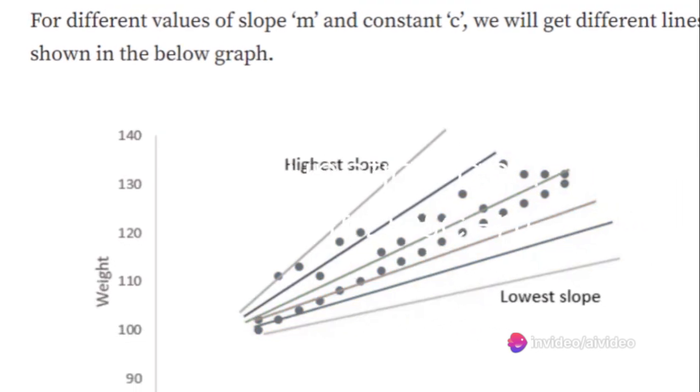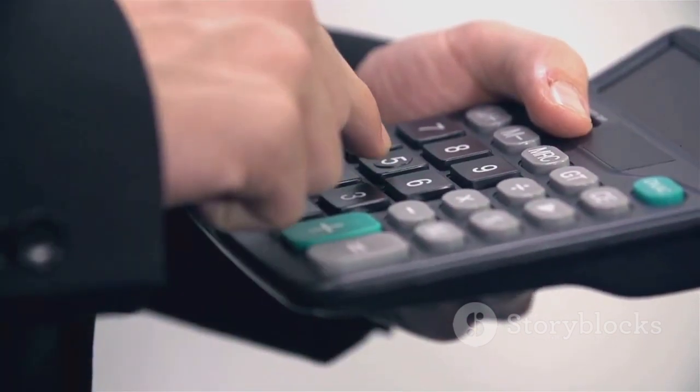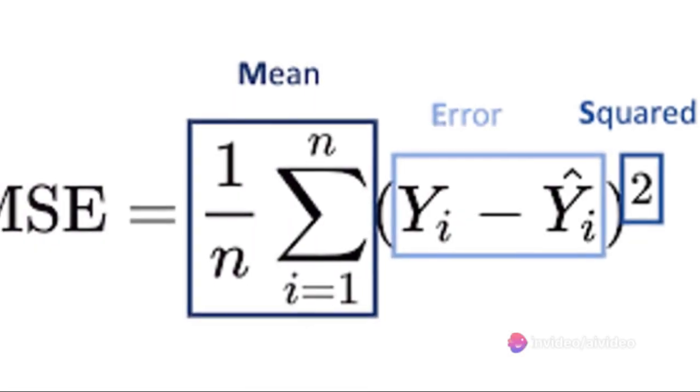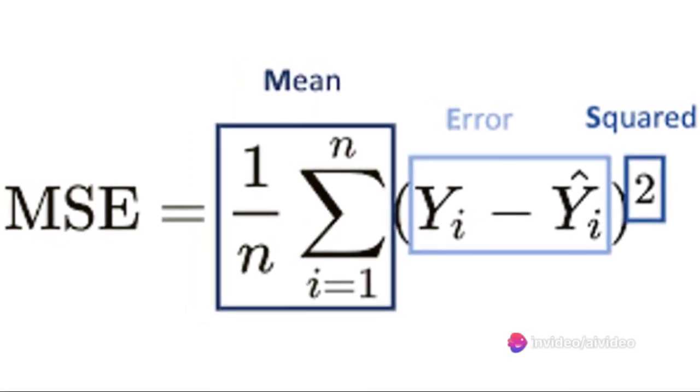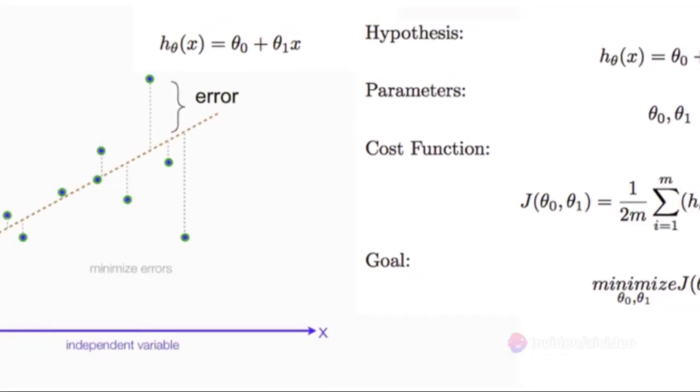But how does a linear regression model find the line that perfectly fits our data? This is where the cost function and gradient descent come into play. The cost function, specifically the mean squared error, is minimized to get optimal values for M and C. It measures the average squared difference between the actual and predicted values.